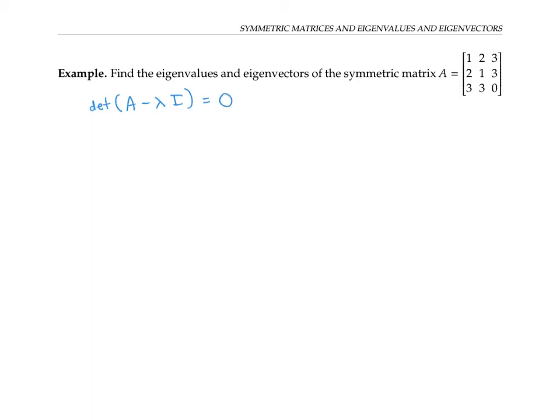Lambda times I is the diagonal matrix with lambdas on the diagonal. So when we subtract that from A, that amounts to subtracting lambda from each diagonal entry. We need to take the determinant of that.